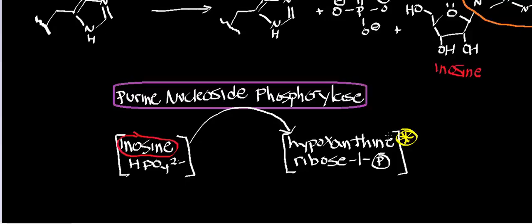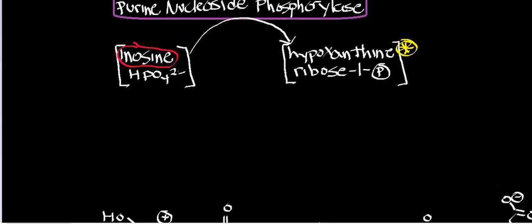Now, this enzyme, which is called purine nucleoside phosphorylase, has a broader specificity than some other enzymes we've been dealing with. Let me write down several molecules that this could react with. Number one, we know that this enzyme, as shown right here, can react with inosine — that's one of the substrates.